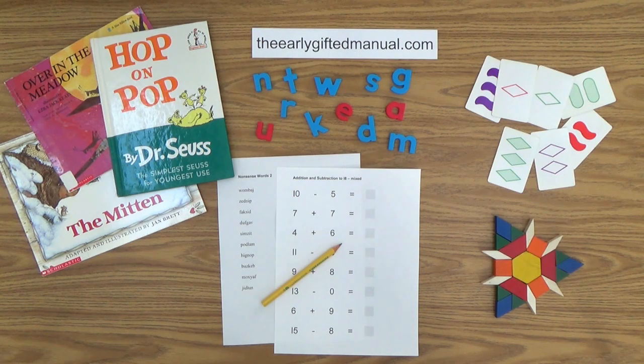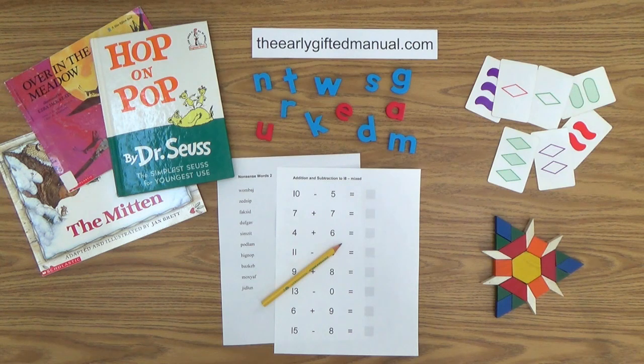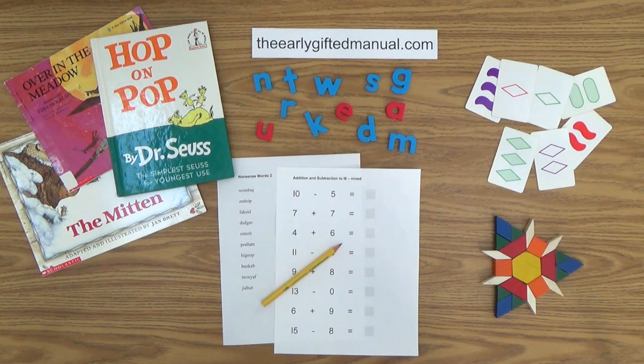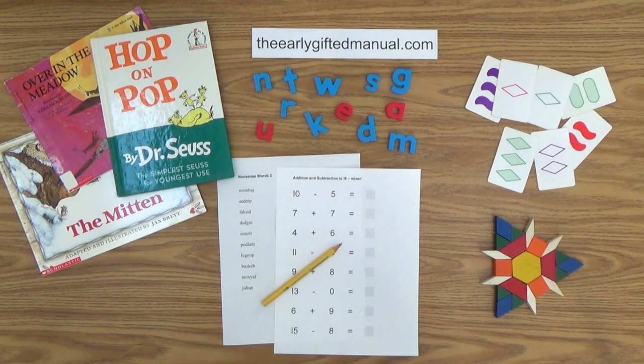As the video lessons are designed to work in conjunction with the program on my website, I ask you to, at some point, click on the URL link in the description box below, and this action will take you to theearlygiftedmanual.com. By doing that, you will be able to put this lesson and all of the video lessons here on my channel in the proper context of the total program that I am presenting to you and your child.